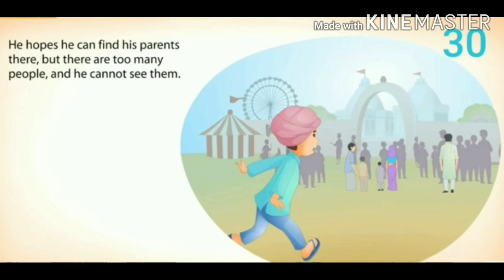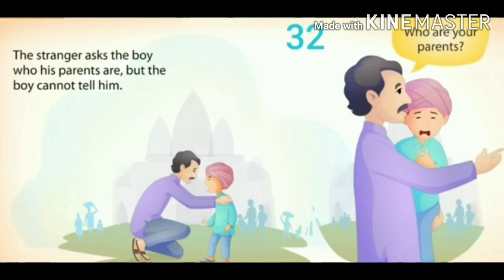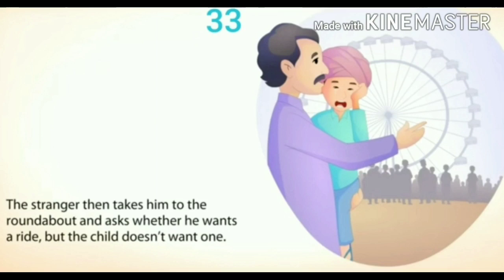Part 3 deals with when a man meets this child — a stranger meets him in the fair. A kind-hearted man rescues this poor little boy from the stampede of people and lifts him up in his arms. The stranger asks the boy about his parents, but the boy cannot tell him anything and only repeats, 'I want my father, I want my mother.' In order to make the little child feel relaxed, this kind-hearted man takes him to the roundabout and asks whether he wants a ride. But the child does not want any ride now and keeps sobbing, 'I want my father, I want my mother.'